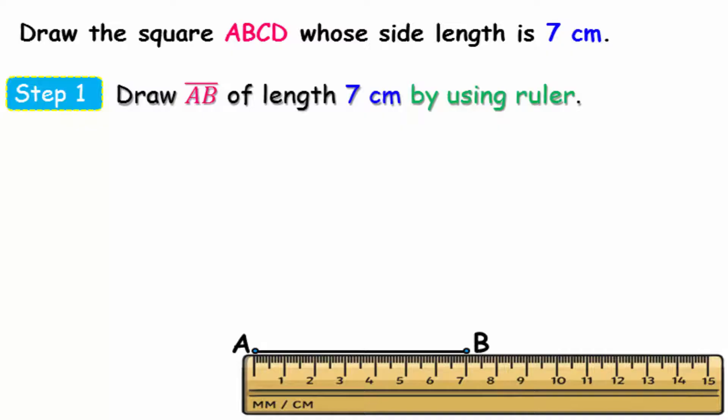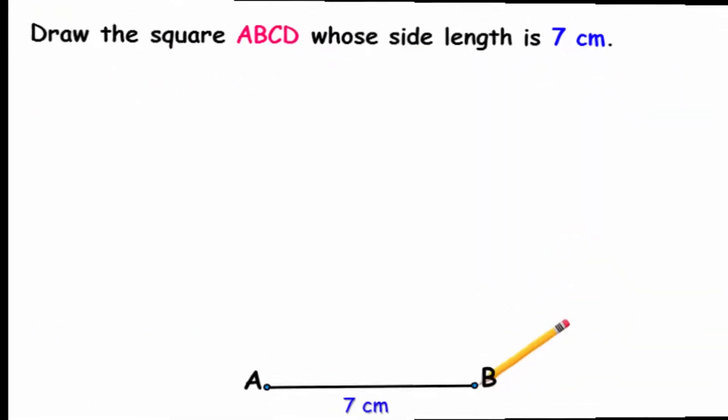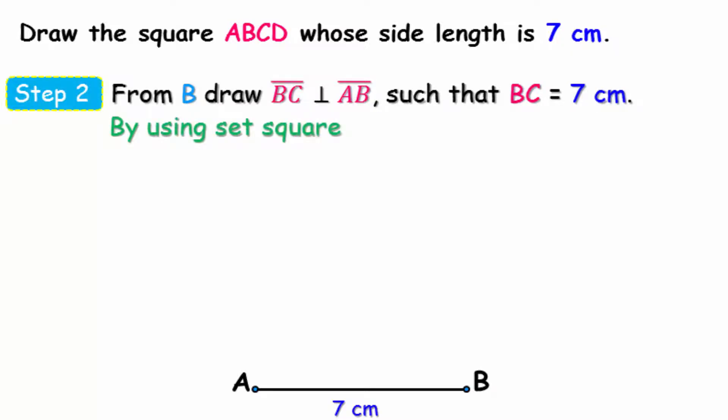Second step, we stand at point B and then draw a line that is perpendicular to the straight line AB such that the length of BC equals 7 centimeters.